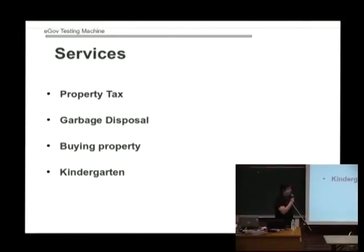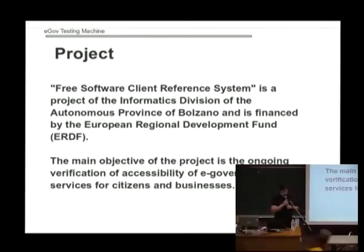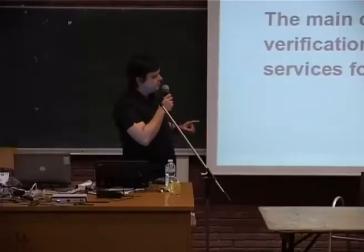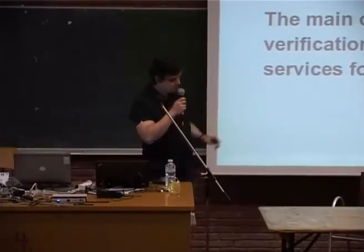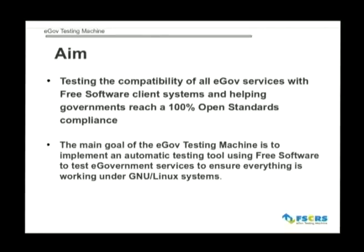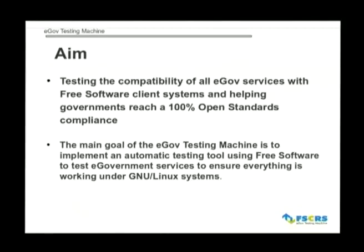The project we have here is quite a mouthful — it's called the Free Software Client Reference System. What this means is we take a specific GNU/Linux or OpenBSD distribution as a reference system, run all our tests on it, and make sure that all government services can be accessed on at least that system. The main goal is to ensure everything can be accessed and all of this must be automated.